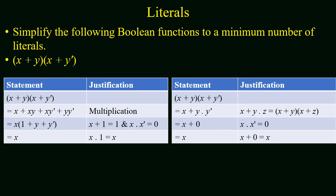Now we simplify the Boolean function (x + y)(x + y'). This function can be simplified using two methods. First, using multiplication: we expand to x + x·y' + x·y + y·y'. Since y·y' equals zero and x plus one equals one, this reduces to x·1, which equals x. In the second method, (x + y)(x + y') reduces to x + y·y'. Again, y·y' equals zero, and x + zero equals x.